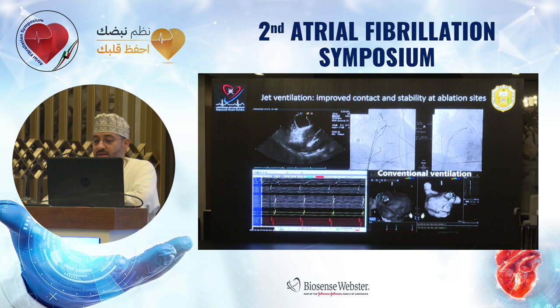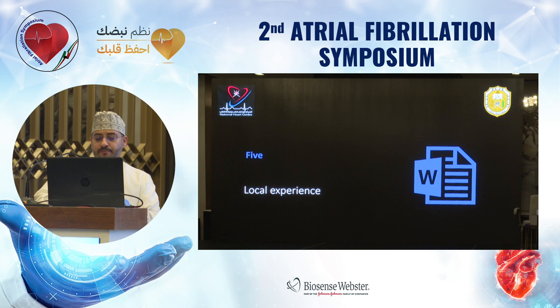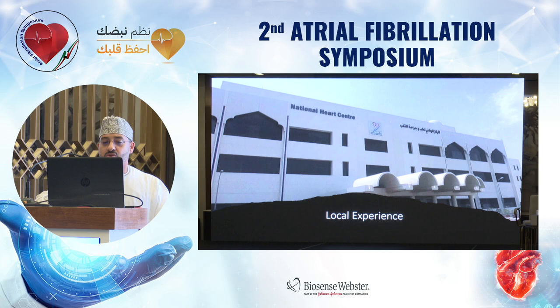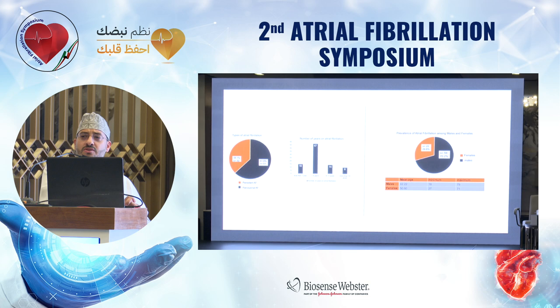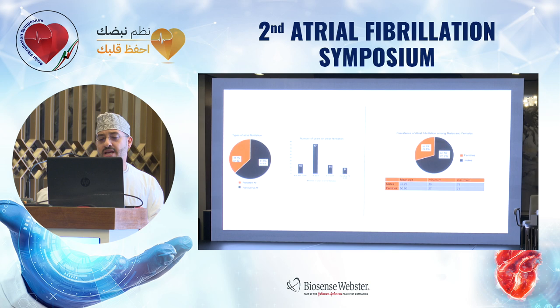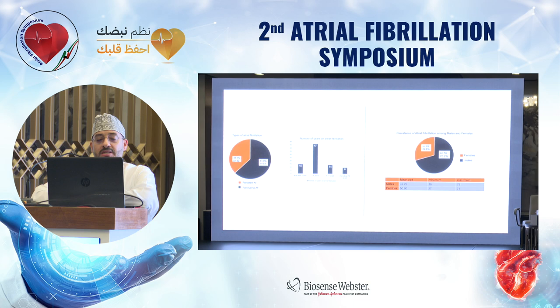Now for local experience. I performed all my AFib ablations at the National Heart Center. This is a small retrospective study continuing from 2016 to 2019. About 60–70% of cases were men with a mean age around 40; mean age for females was around 50. Most had paroxysmal AFib (around 60%), and about 50% had AFib for one to five years. I think we are more aggressive now in taking these patients to the lab.